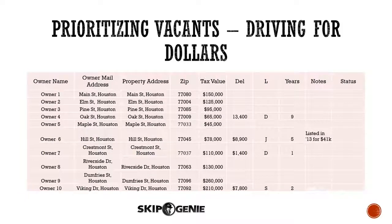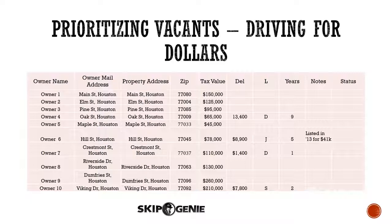We'll take this another step further. Going to Zillow, I look at each property and find that owner six on Hill Street had the property listed for sale in 2013 for $41,000. The appraisal district shows it at $78,000, the expired listing was for $41,000 in 2013, and their tax problem has only gotten worse. That tells me the owner wanted to sell and at what price — I'm going to zero in on that property. That has now become my top priority because I know they wanted to sell at one point.